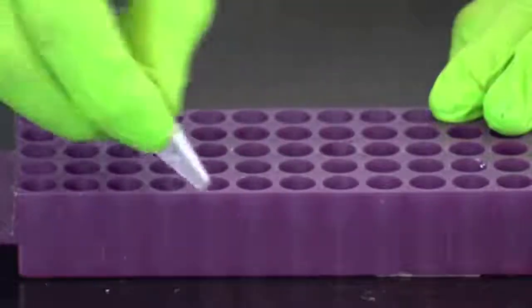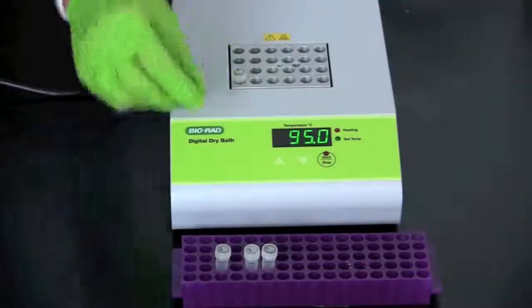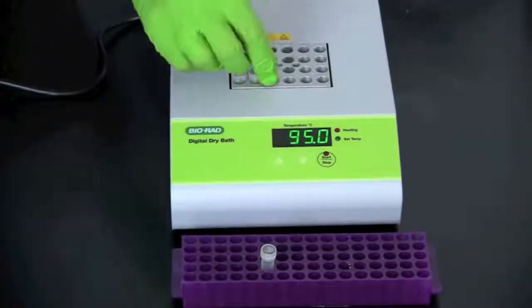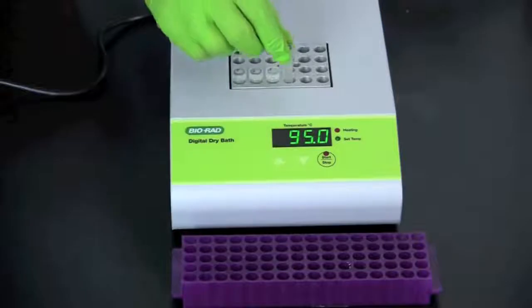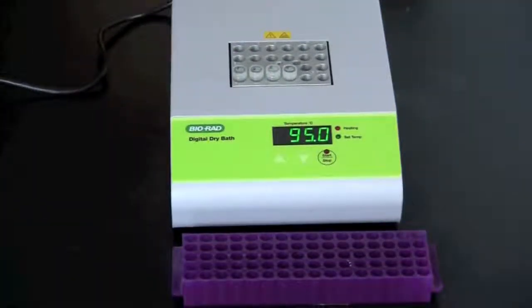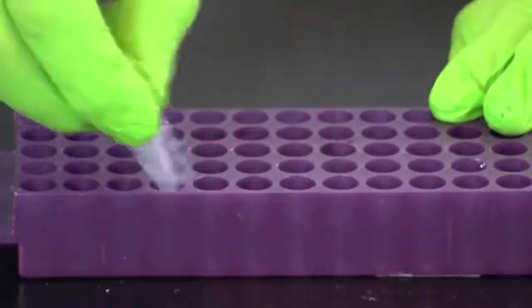Remove the tubes from the 56 degree incubation and vortex or shake them. Then incubate the tubes at 95 degrees Celsius for 5 minutes. After the incubation, vortex or shake the tubes.